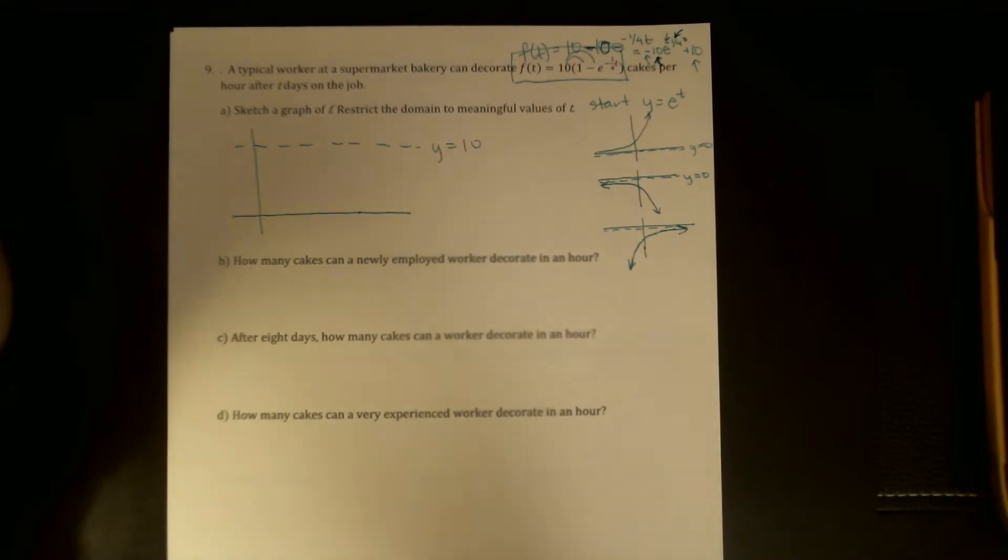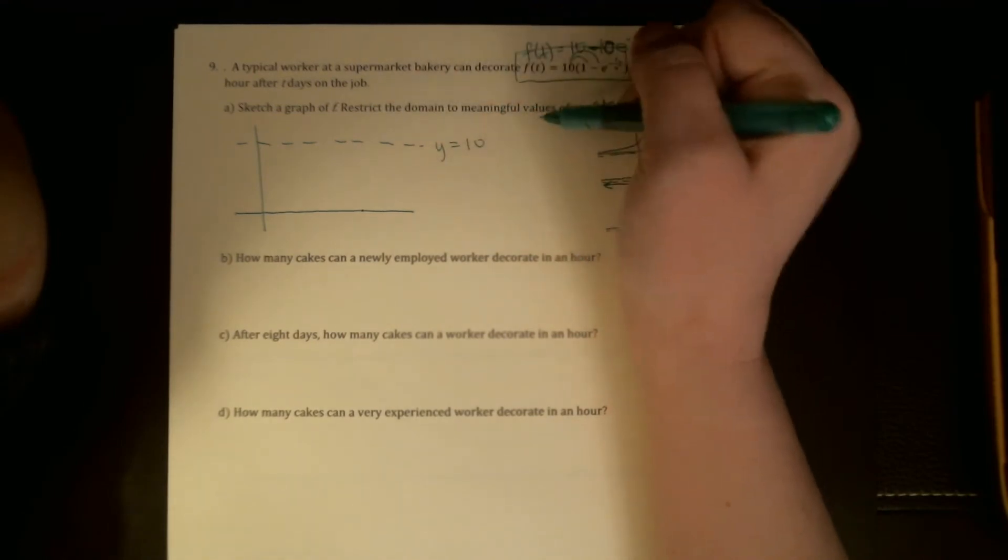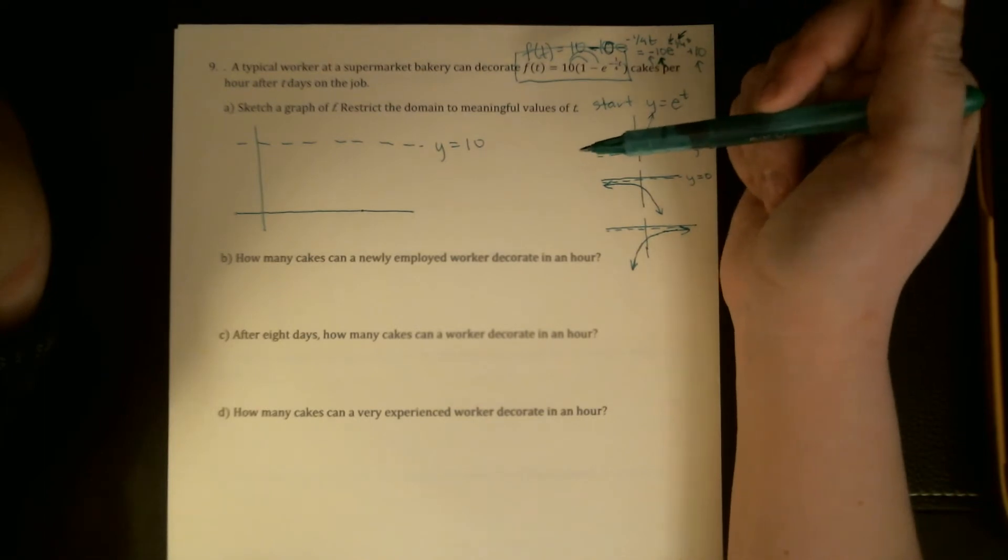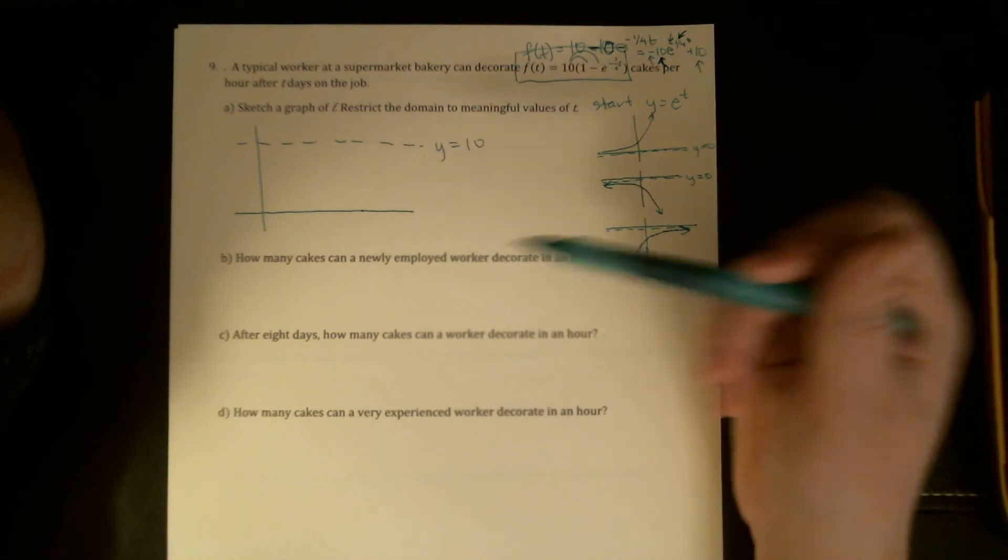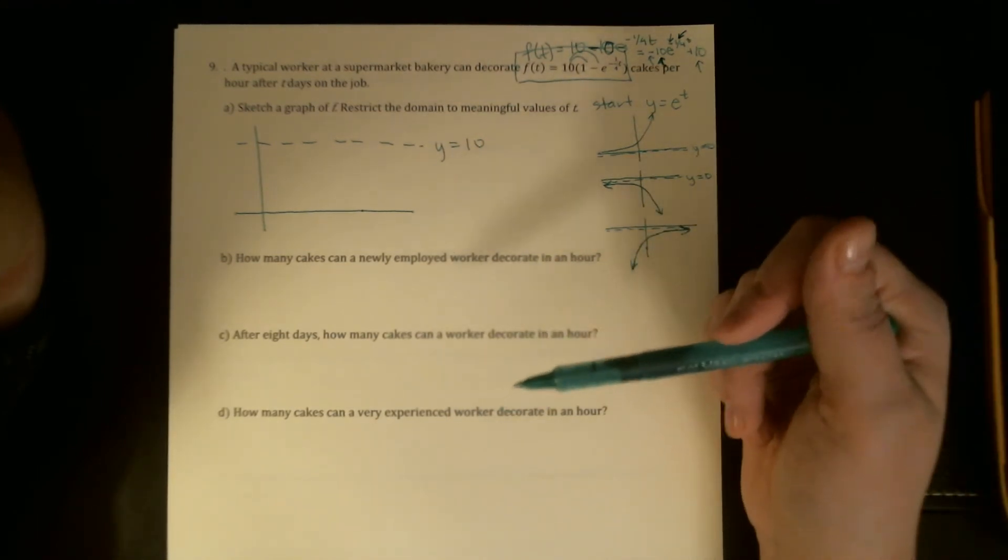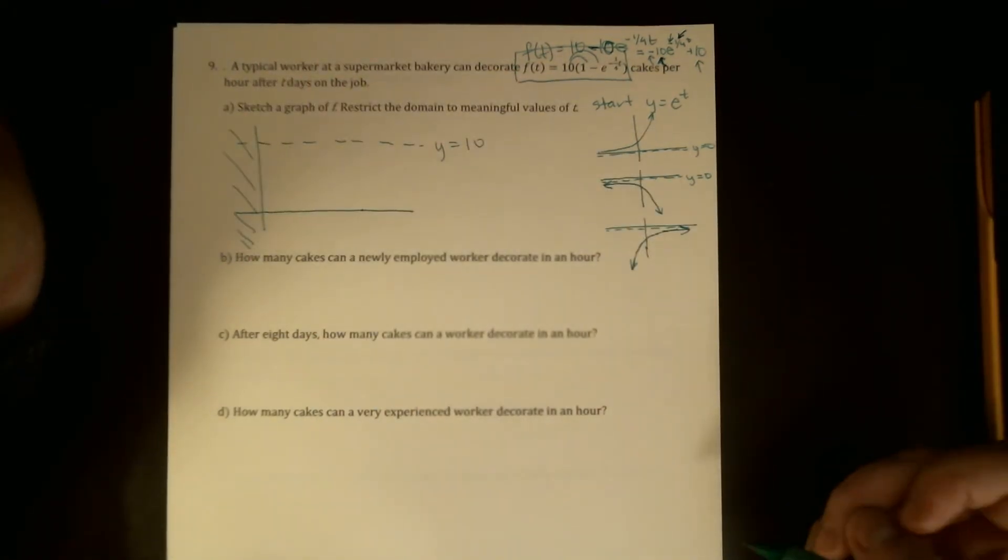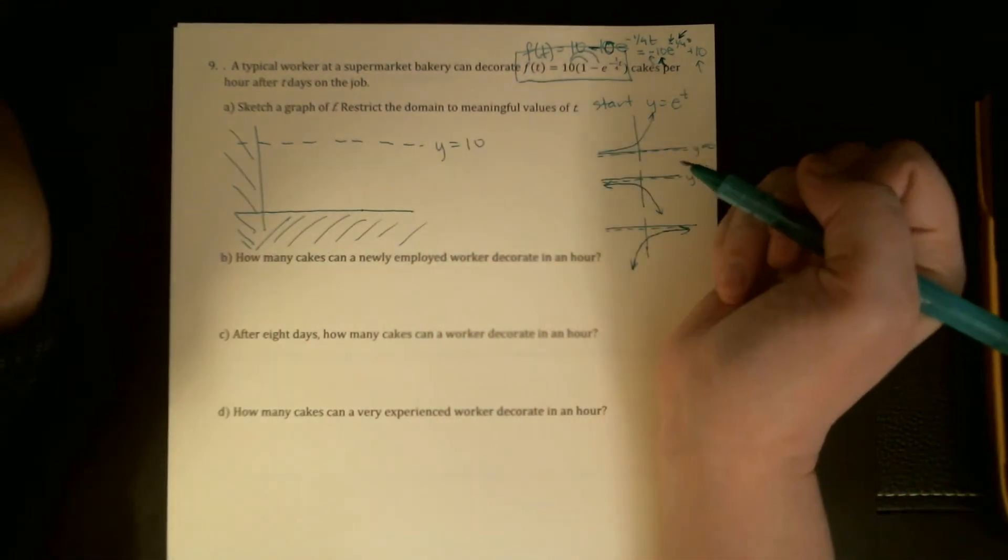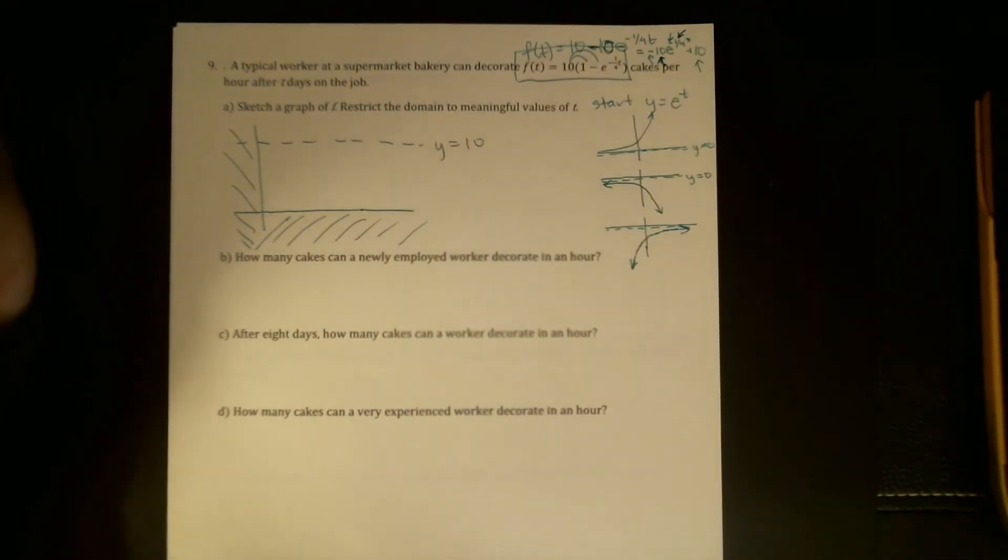I'll do that in just a second, but I want to say since I've already made this decision without saying why, we were supposed to restrict the domain to meaningful values of t. So I am only showing quadrant one and the reason I'm only showing quadrant one is I don't expect this exponential shape to continue backwards before this person started their job, so I don't want to see negative t. I also don't want to see negative cakes per hour, so I really do only want to see quadrant one.